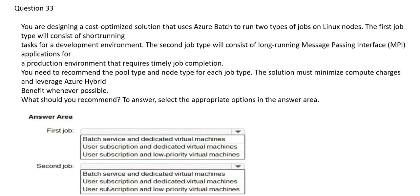For the second (production) job, we again eliminate Option 3 since user subscription is not supported with low-priority VMs. Between the remaining options, Option 1 — batch service with dedicated VMs — is the right choice because there is an MPI requirement. For MPI, always use batch service, as MPI needs a solid bulk of compute power for parallel processing. Since this is a production environment where timely job completion is critical, dedicated VMs are required. These are our two final answers.